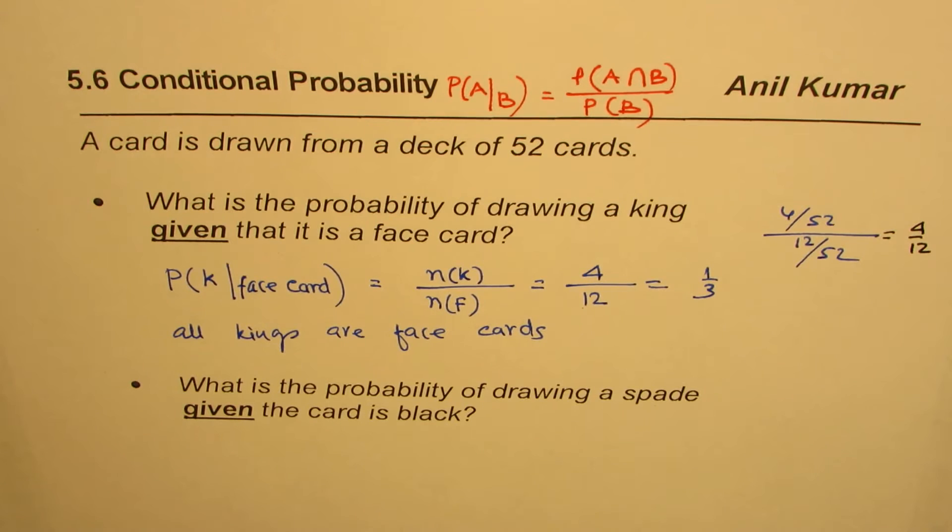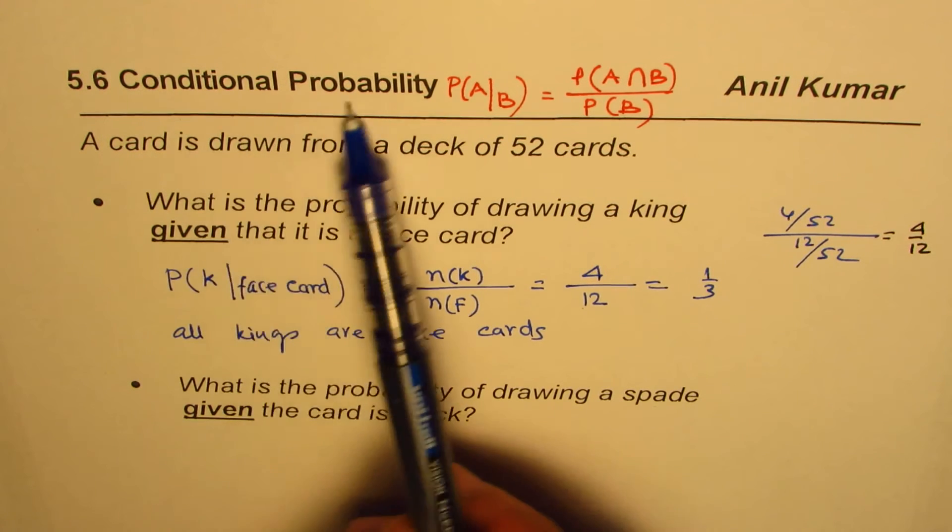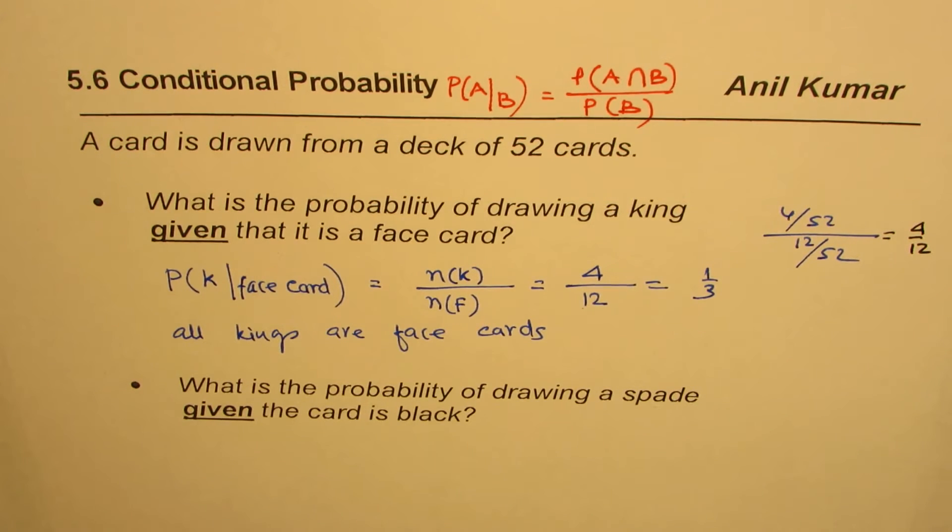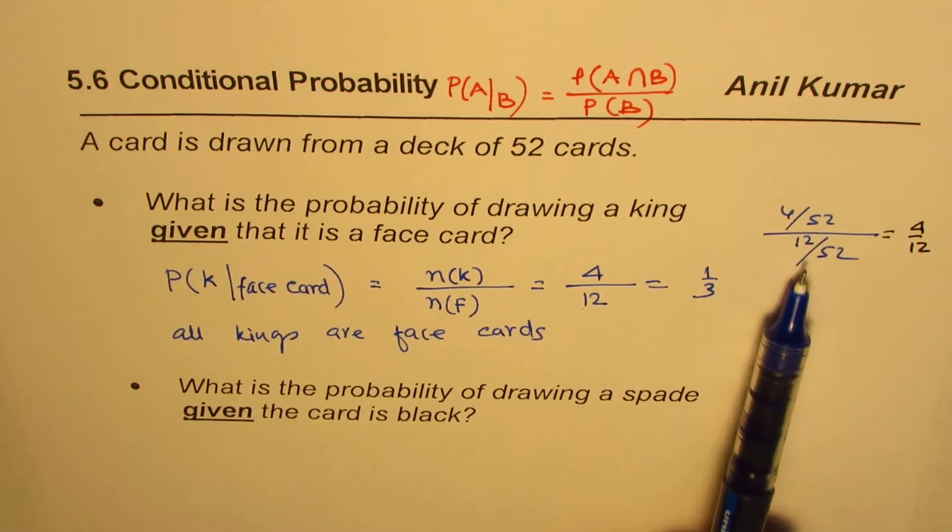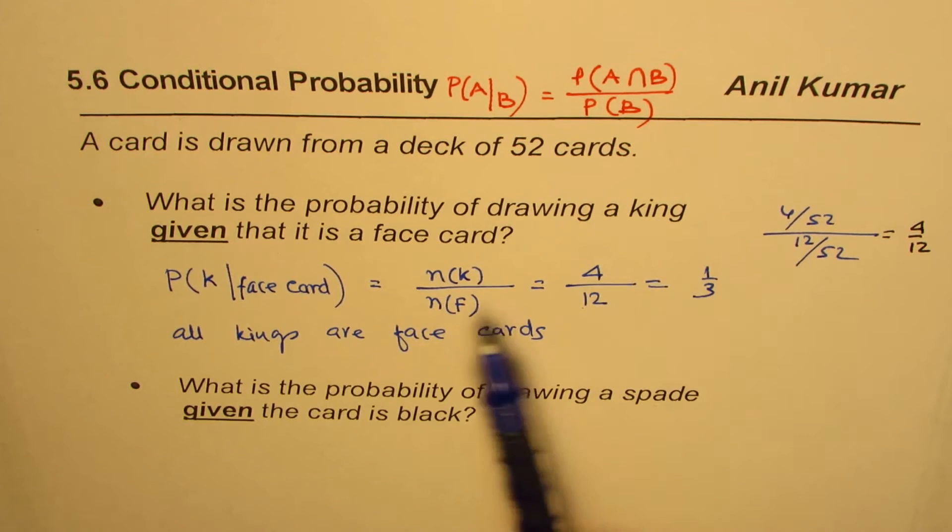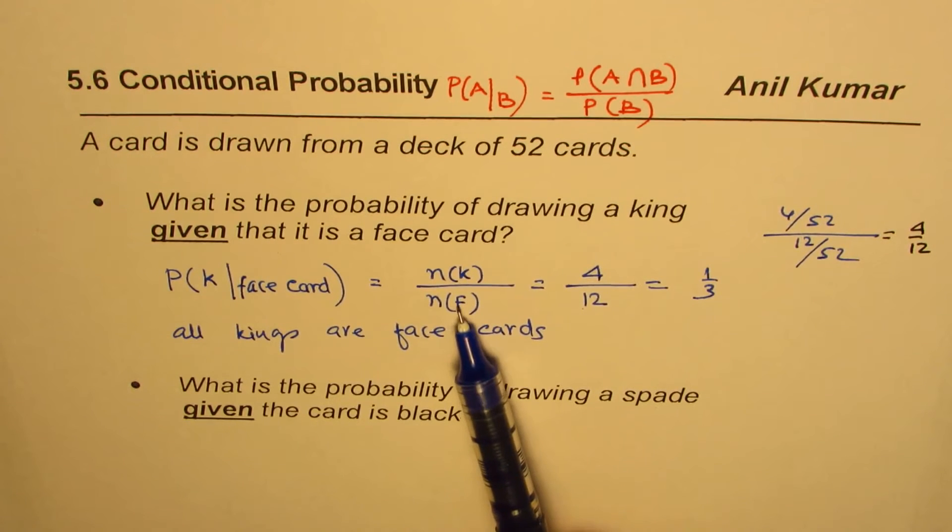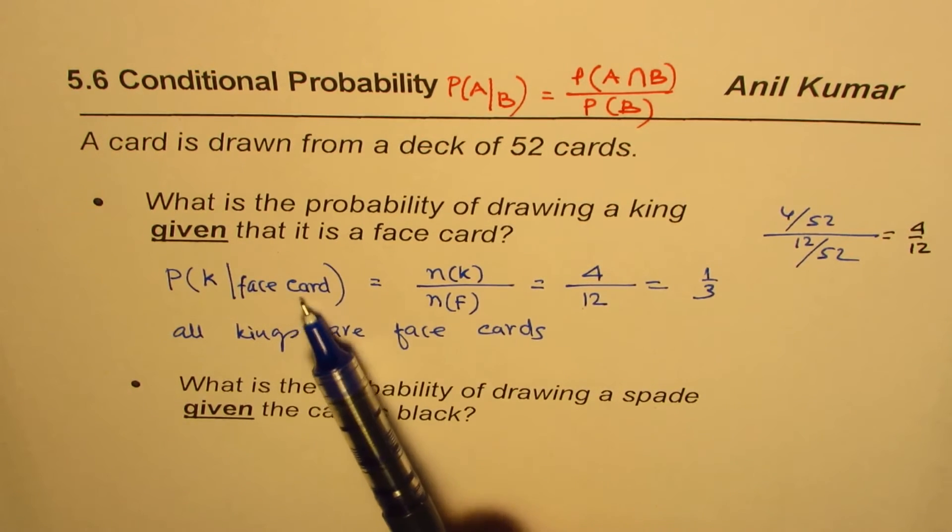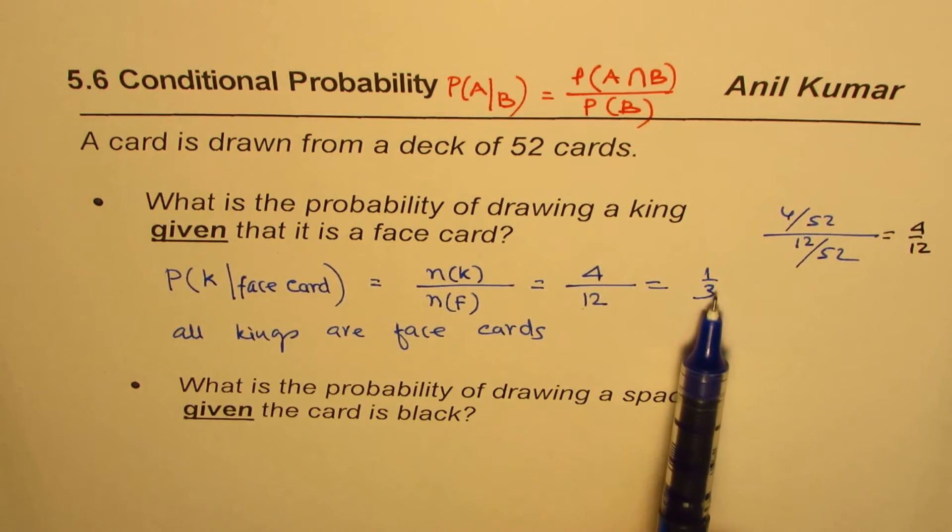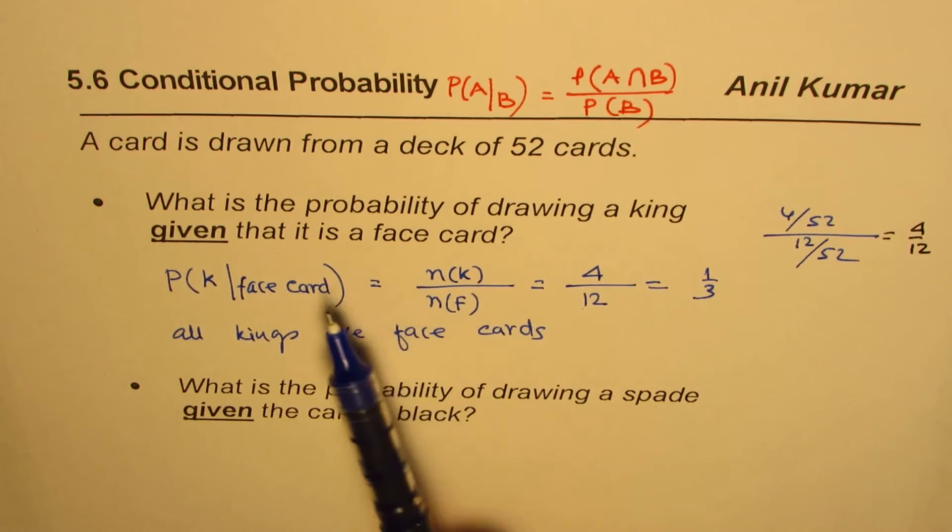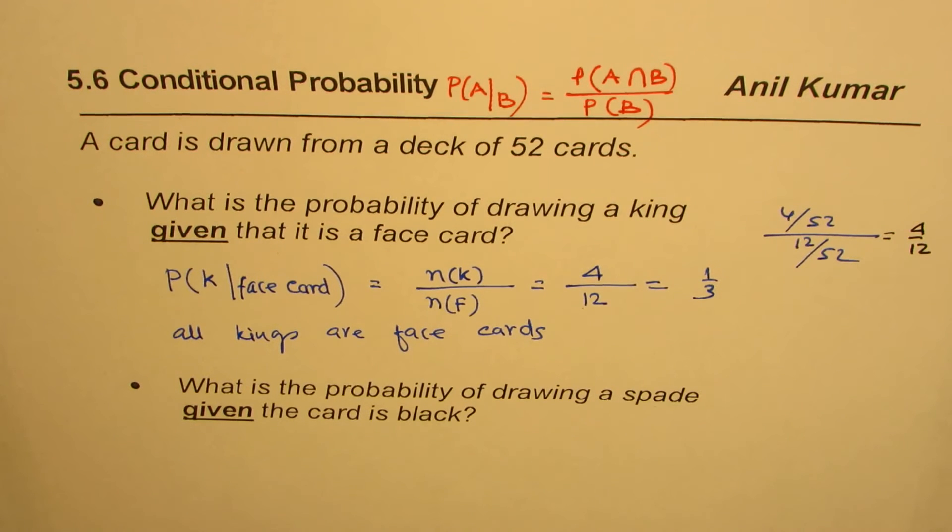So it is important to understand that when we talk about probability with conditions, the condition changes the sample space. So we can work with that modified sample space, which is face card. So we have 4 kings and 12 face cards, and that gives us the result. Now this is a very good approach, and I would like you to adopt this approach, especially for multiple choice questions and fill in the blanks. The second one is for you to practice. What is the probability of drawing a